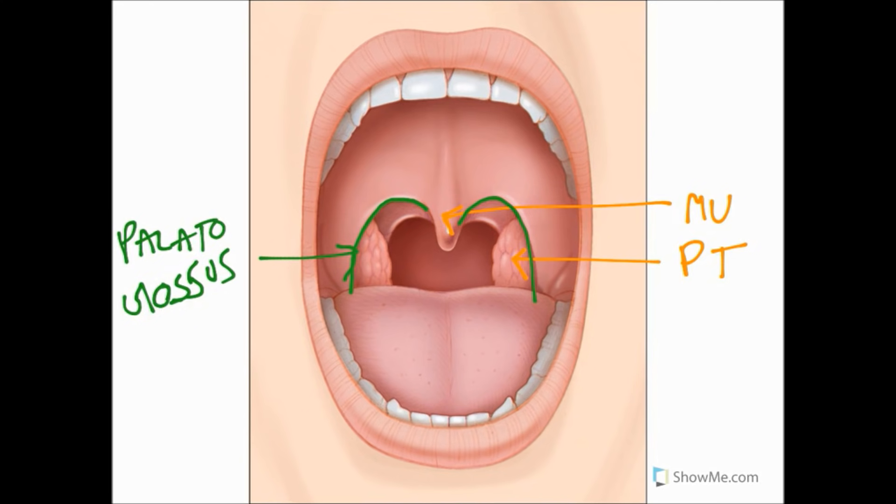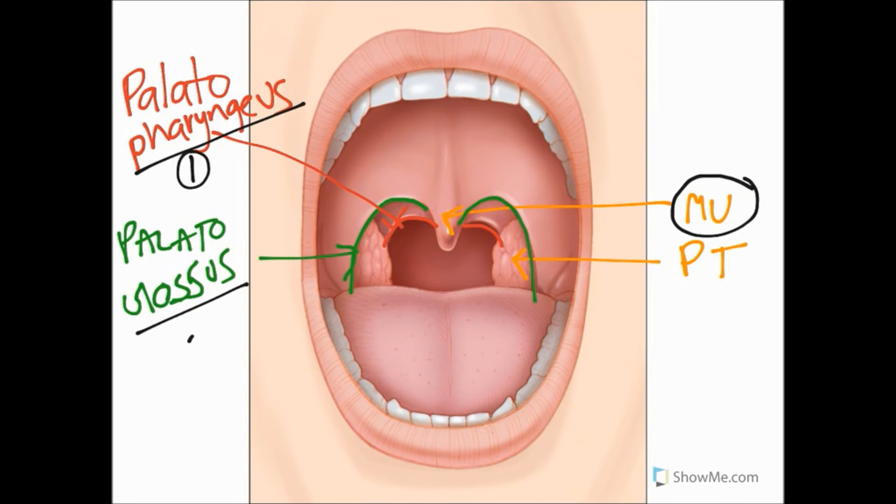The one in the background in here, we'll do that in a slightly different color, that one is called palatopharyngeus. So we've got these three muscles: one over here, one here, and of course we mustn't forget the muscular uvulae.